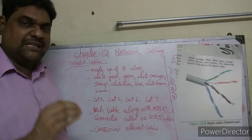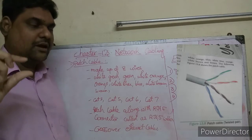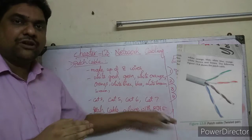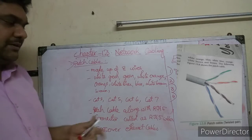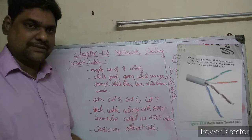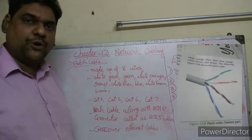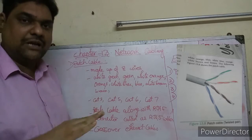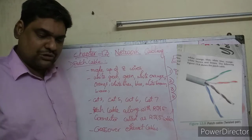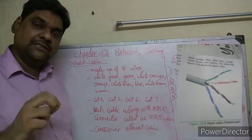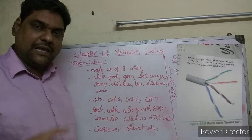RJ45 - RJ means registered jack. It is a registered jack connector in the plastic casing called RJ45. We use ethernet cables to connect a computer to a modem or router. If we need a special type of ethernet cable, that is called a crossover ethernet cable.